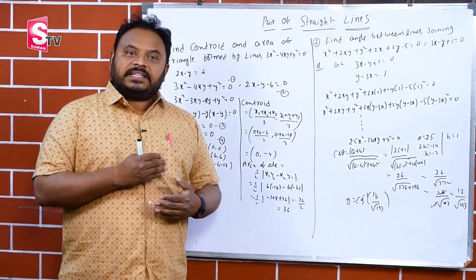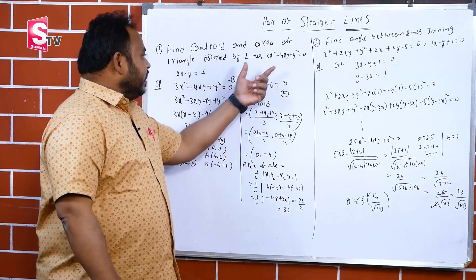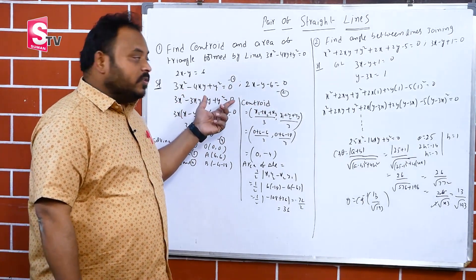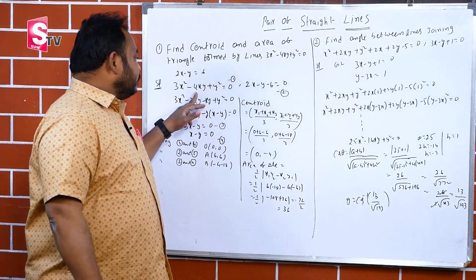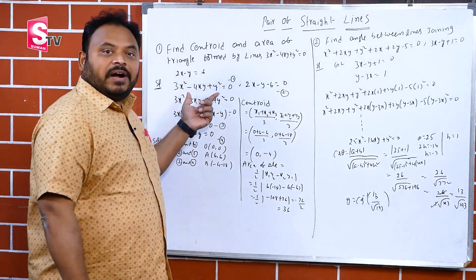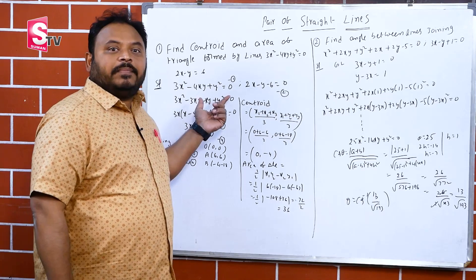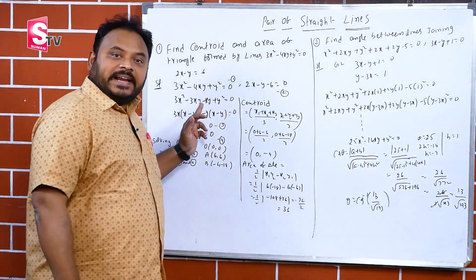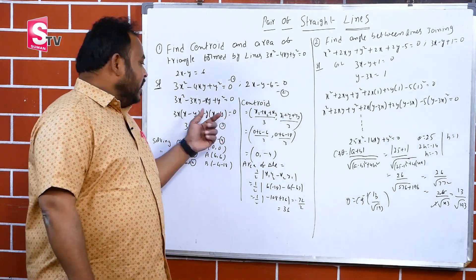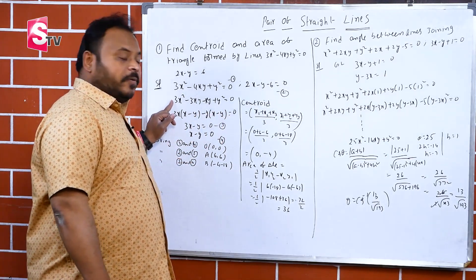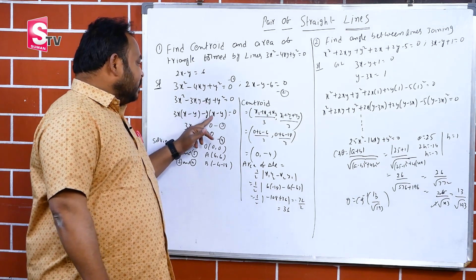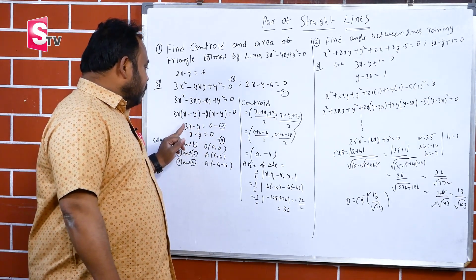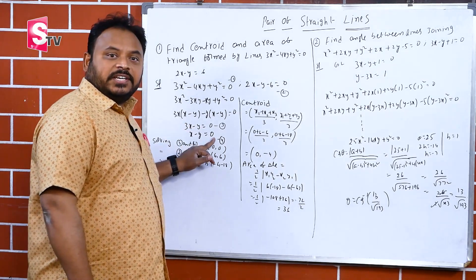The given combined equation is 3x²−4xy+y²=0. Splitting the middle term: 3x²−3xy−xy+y²=0, which factors as 3x(x−y)−y(x−y)=0. So we get (3x−y)(x−y)=0, giving us two lines: 3x−y=0 and x−y=0.